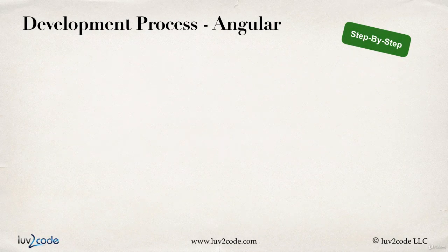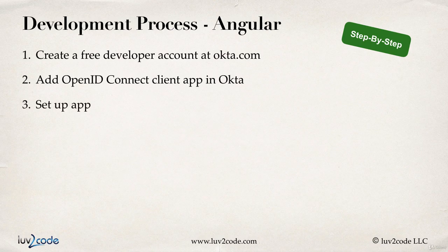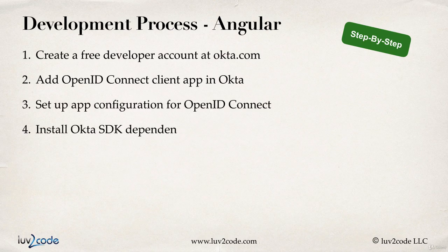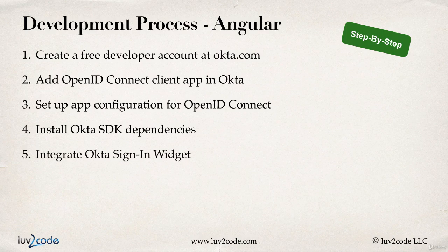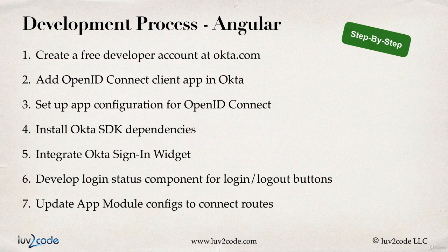Let's start with our development process for the Angular front end. The first thing we'll do is create a free developer account at Okta.com, then add an OpenID Connect client application in Okta. Next we'll set up our app configuration for OpenID Connect, install the Okta SDK dependencies, integrate the Okta sign-in widget, develop the login status component for login and logout buttons, and finally update our app module configs to connect the routes.